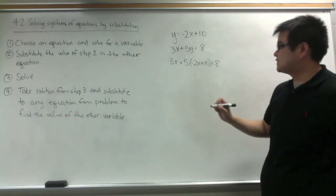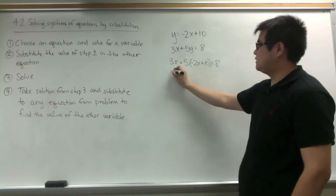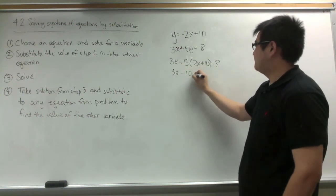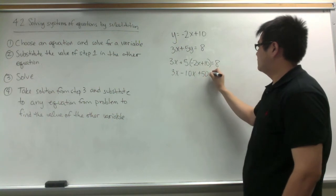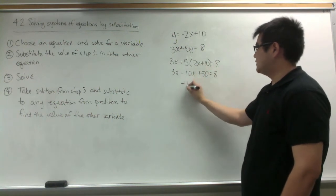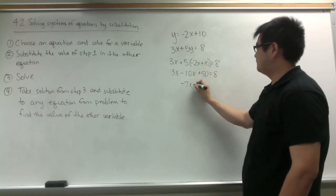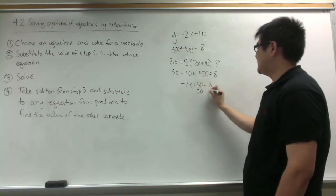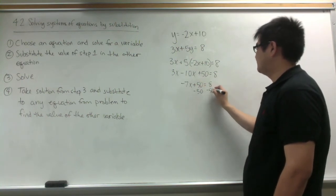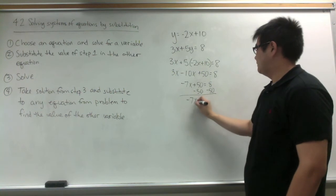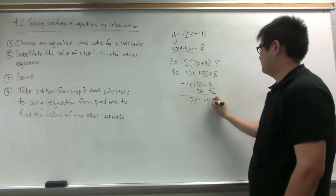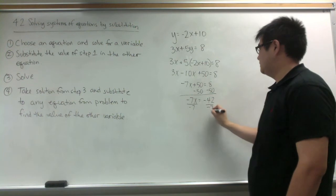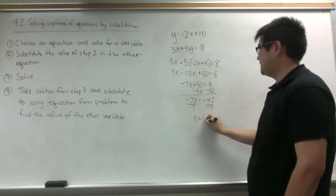The third step says to solve, so we're going to solve this multi-step equation. We're going to distribute the 5, combine like terms, subtract 50 on both sides, divide both sides by negative 7, and x is equal to 6.